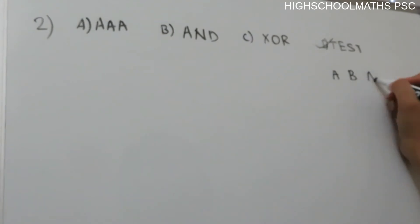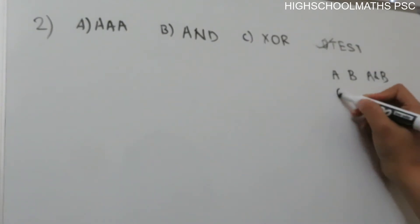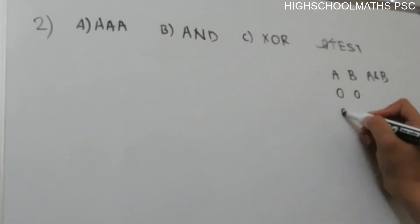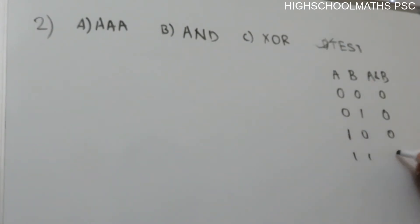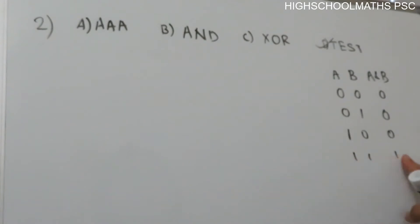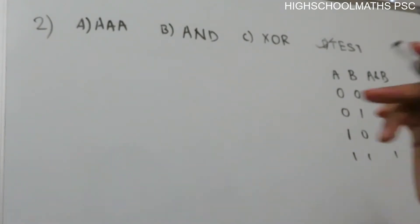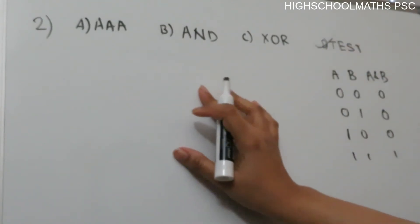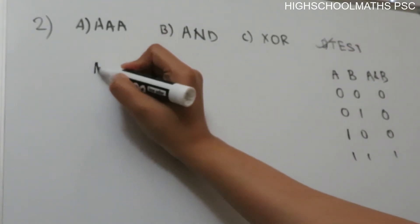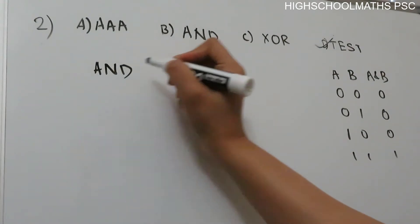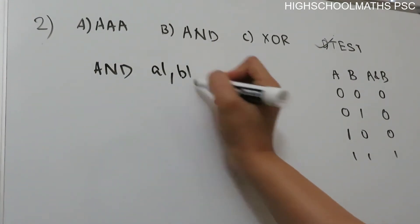What is A AND B? Our inputs are: 0,0; 0,1; 1,0; 1,1. If we have a logical AND operation: 0 and 0 gives 0, and only when both inputs are high do we get output A AND B = 1. So in our assembly language, we have the AND instruction: AND AL, BL. AL is 0011 and BL is 001.